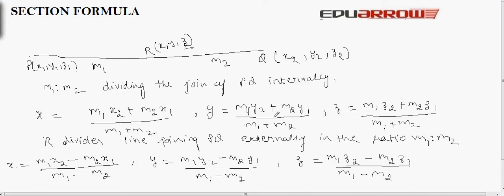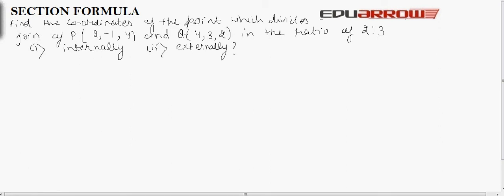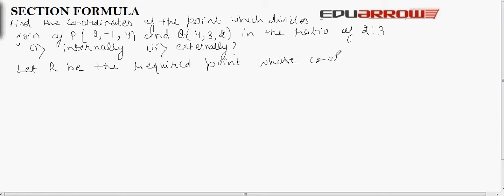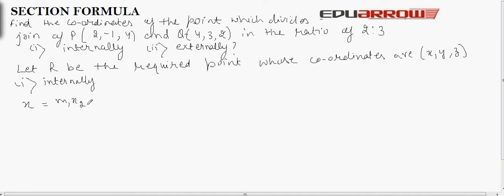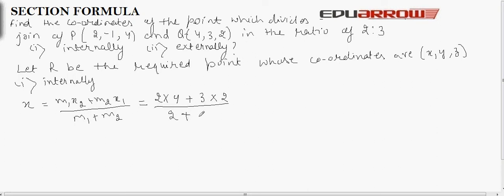Now let us see one example based on these two formulas. In this question we have to find out the coordinates of the point which divides the join of P and Q in the ratio 2 to 3 — firstly internally, secondly externally. Let R be the required point whose coordinates are x, y and z. For the first case, when it divides internally, the coordinate x is given as (M1 times x2 plus M2 times x1) divided by (M1 plus M2), which equals M1 is 2, x2 is 4, M2 is 3, x1 is 2, divided by (2 plus 3).